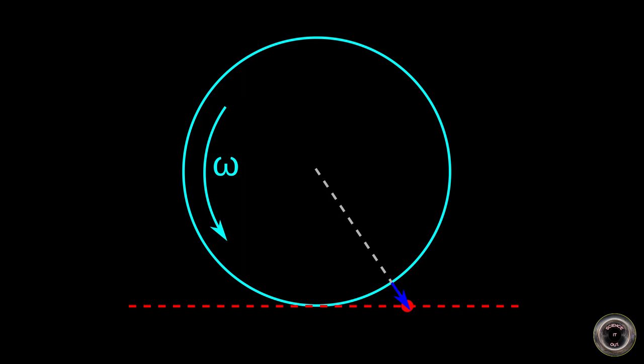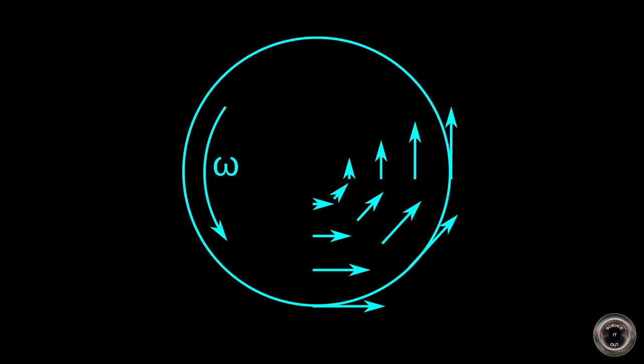The Coriolis force, on the other hand, can be thought of as the effect of trying to keep the same momentum when moving over different points in the non-inertial frame. Here cyan arrows represent the velocities of points of the rotating frame, red arrow is the velocity of the object in the inertial frame, and green arrow is the velocity of the object in the rotating frame.